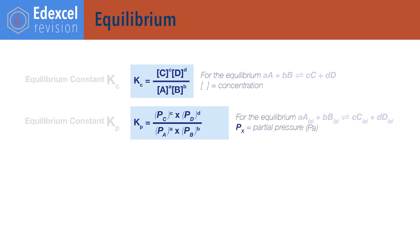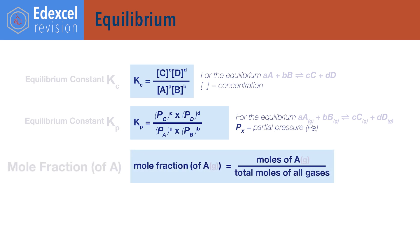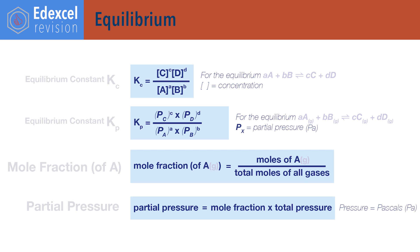Kp equals partial pressure of products times each other divided by partial pressures of reactants times each other, each raised to the power of their molar ratio in the balanced reaction equation. Kp is the equilibrium constant for gases based on partial pressures; partial pressures have the units of pascals. Mole fraction of a gas equals the moles of that gas in the system divided by the total number of all moles of gas in the system. Partial pressure of a gas equals its mole fraction times the total pressure, where pressure is in pascals.